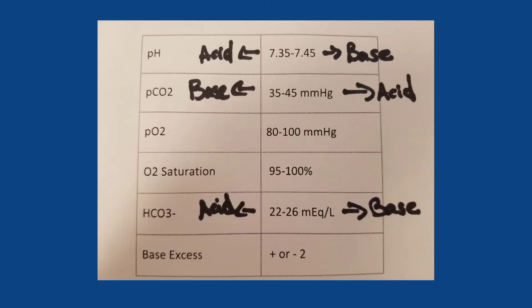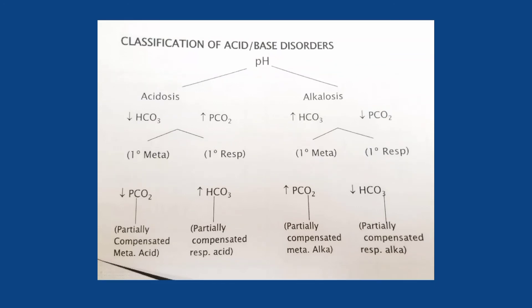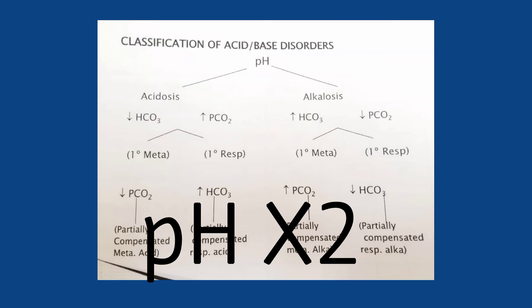Then under that, if there's a decreased pCO2 and a decreased HCO3, you have partially compensated metabolic acidosis. If there's an increase in HCO3, you have partially compensated respiratory acidosis. Under the alkalosis side: increase in pCO2 gives you partially compensated metabolic alkalosis, and decreased HCO3 gives you partially compensated respiratory alkalosis.